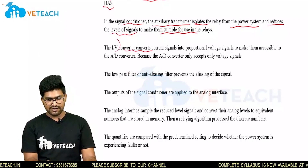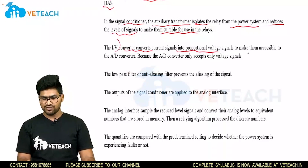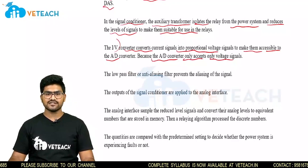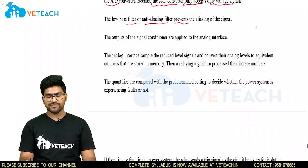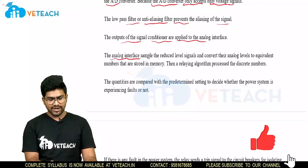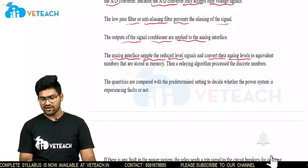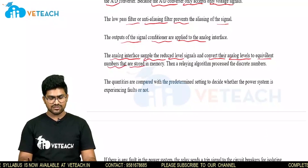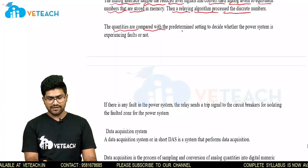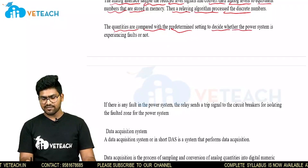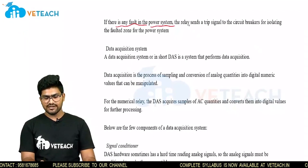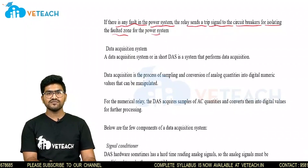The I to V converter converts current signals to proportional voltage signals to make them accessible to the A to D converter, because the A to D converter only accepts voltage signals. The low pass filter or anti-aliasing filter prevents the aliasing of signals. The outputs of the signal conditioner are applied to the analog interface. The analog interface samples the reduced-level signals and converts the analog levels to equivalent numbers that are stored in memory. A relaying algorithm then processes the discrete numbers. The quantities are compared with predetermined settings to decide whether the power system is experiencing faults or not. If there is any fault, the relay sends a trip signal to the circuit breaker to isolate the faulted zone.